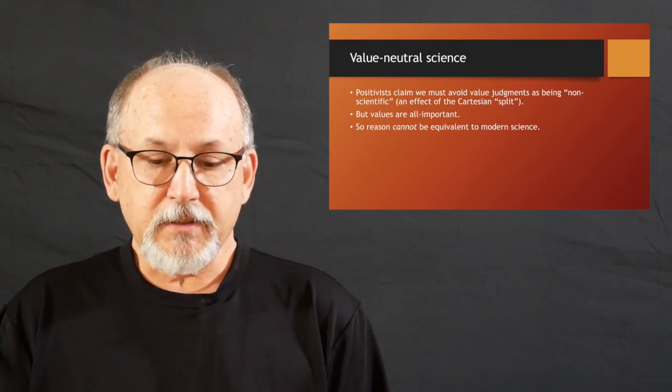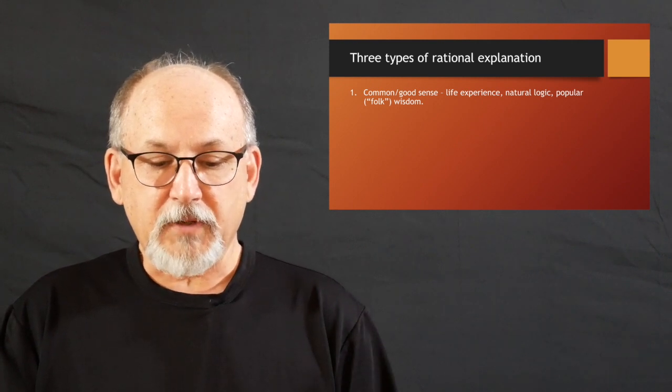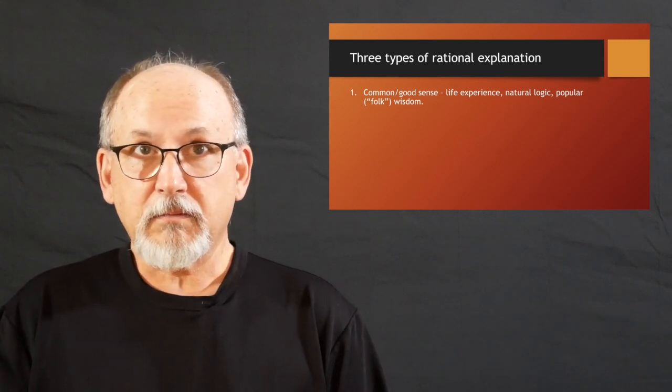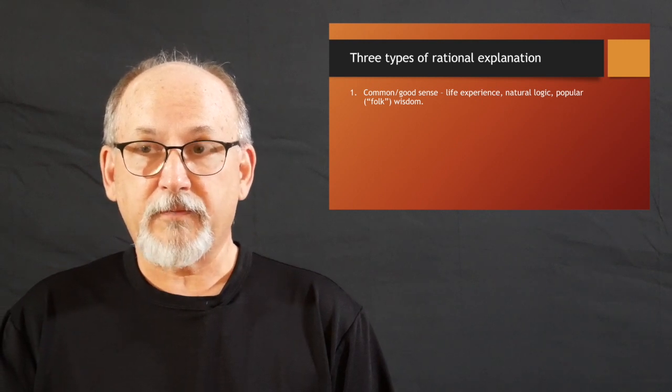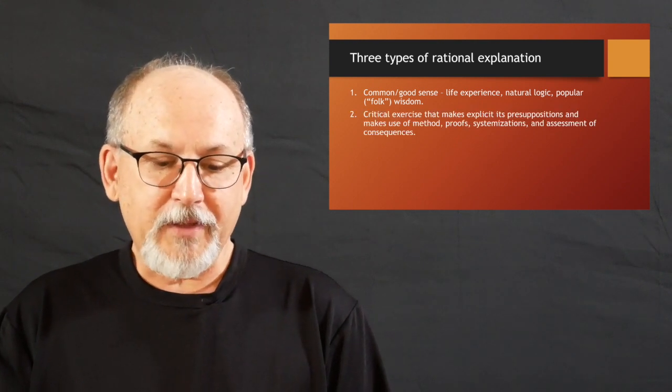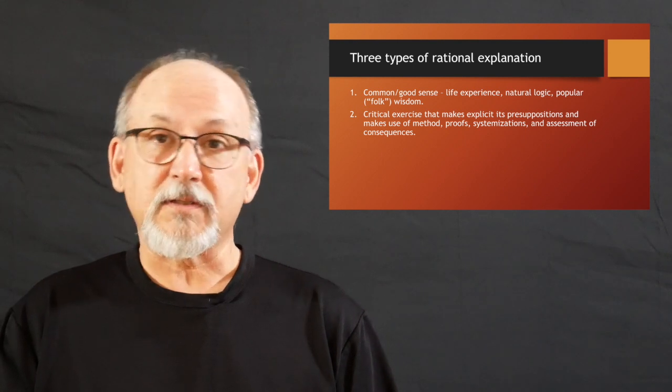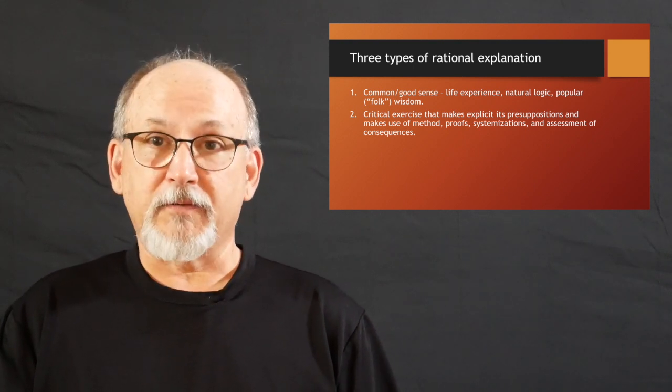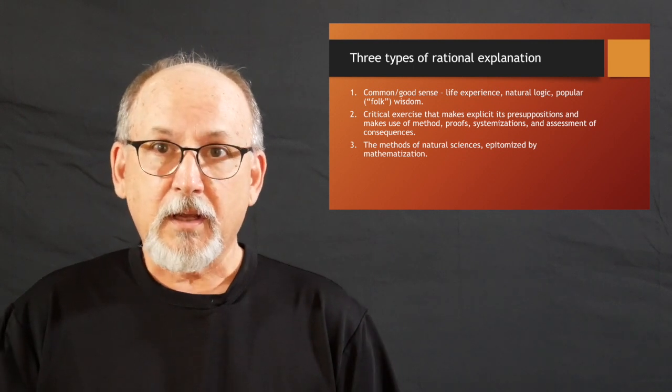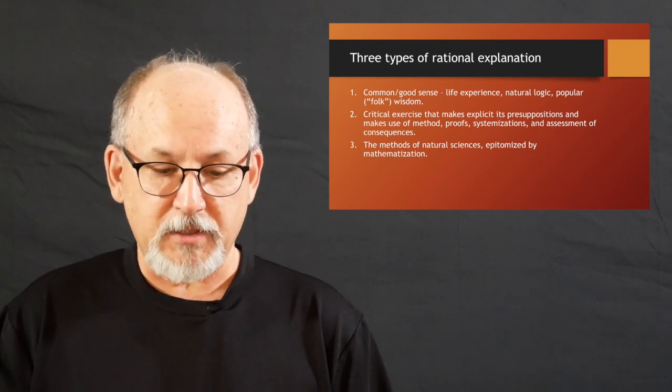And putting aside all other ways of knowing and encountering the world and each other as somehow just mere opinion is a tragic error, Ellacuría would say. So there's at least three types of rational explanation. And we'll see this expanded when we get to the work of Enrique Dussel. But first, there's the idea of common or good sense. You know, life experience, a kind of natural logic of popular or folk wisdom gets a lot of people and a lot of societies through a lot of eons of time, not too badly. Hard to say that that's unreasonable. And then, of course, there's critical thinking, critical exercise that makes explicit its own presuppositions and makes use of methods and proofs and systemizations and the assessment of consequences and so forth.